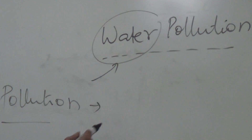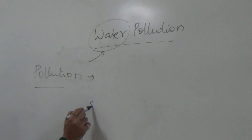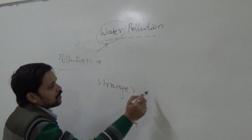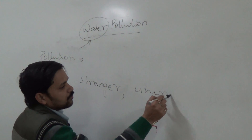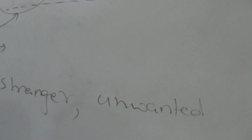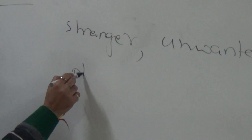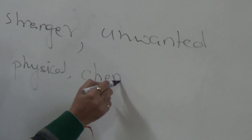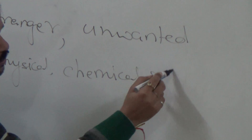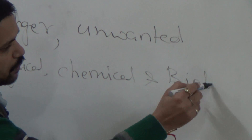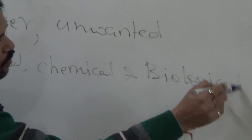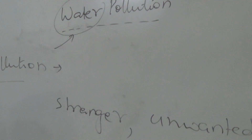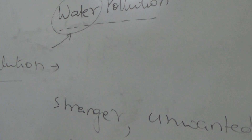We can define water pollution as the presence of any stranger particle — or we can say unwanted particle — that would disturb the properties of water, which may be a physical property, chemical property, or biological property. Due to the disturbance of these properties, the water becomes unfit for human consumption.